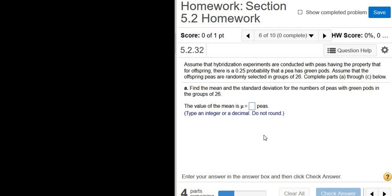Assume that hybridization experiments are conducted with peas having the property that for offspring, there is a 0.25 probability that the pea has green pods. And assume that the offspring peas are randomly selected in groups of 26. So p is going to be 0.25, that's our probability of success. Success here is a pea that has a green pod.